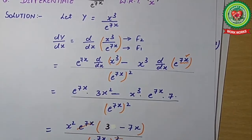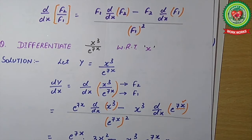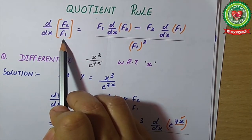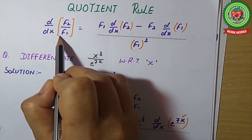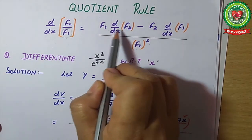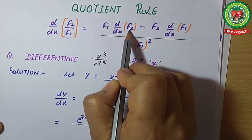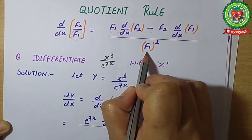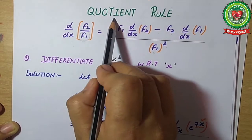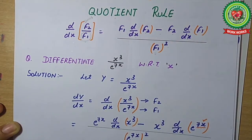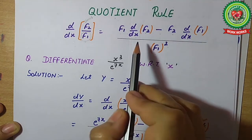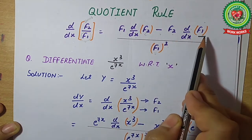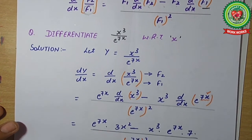Now let's start with the quotient rule. Quotient means fraction — two functions are in fraction form. The formula is: ddx(f1/f2) = [f2·ddx(f1) − f1·ddx(f2)] / (f2)². Always keep in mind: whenever we differentiate using the quotient rule, we always take the numerator differentiation first, then ddx of the denominator.